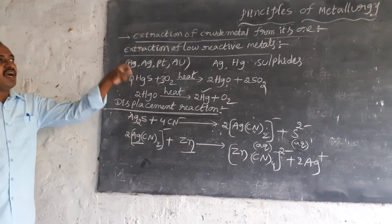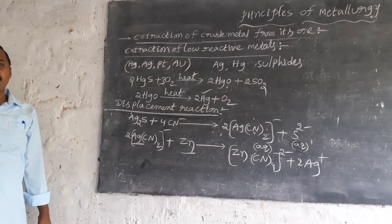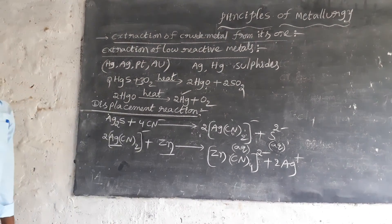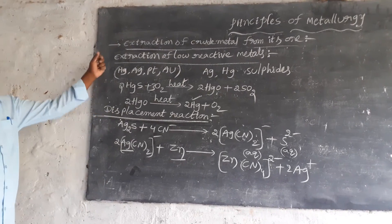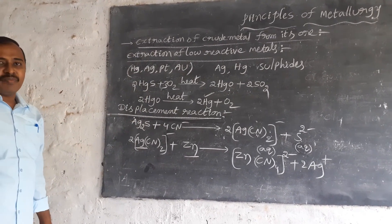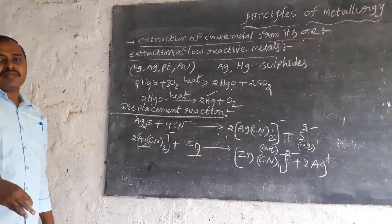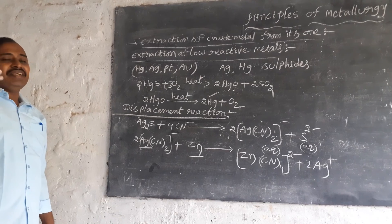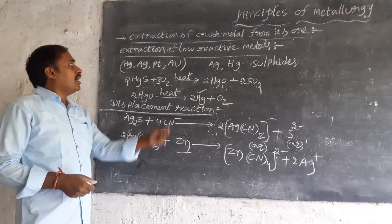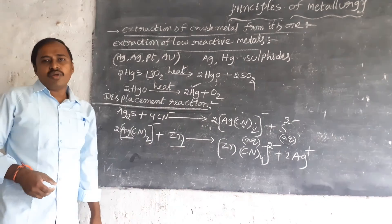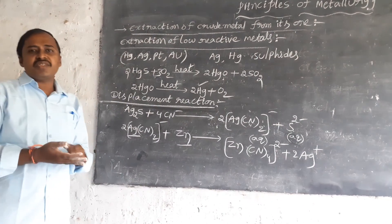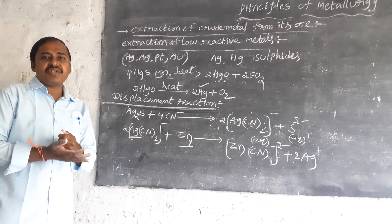This is called extraction of crude metal from its ore. Extraction means we get the crude metal from its respective ores using the reactivity series — highly reactive, moderately reactive, and low reactive metals. Based on reactivity, different processes are used. Finally, we follow the refining process for purification of the crude metal.